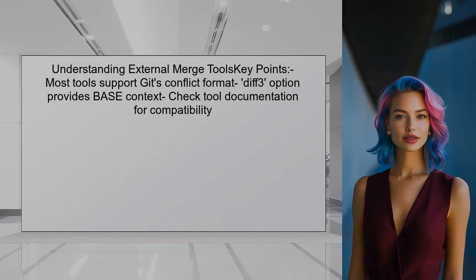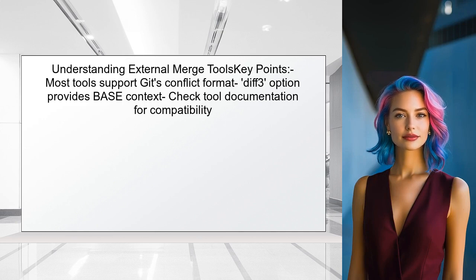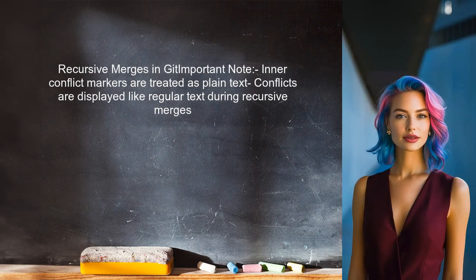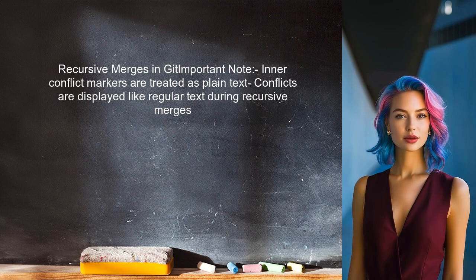Regarding the question about whether the external tool understands Git's conflict format, most modern merge tools do support it. However, the diff3 option can provide additional context by showing the base version as well. Finally, when Git performs a recursive merge, it treats inner conflict markers as plain text. This means that if conflicts arise during the merge, they will be displayed just like any other text, rather than being treated as recursive conflicts.